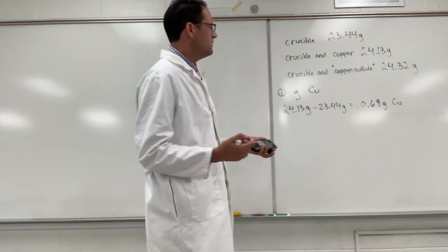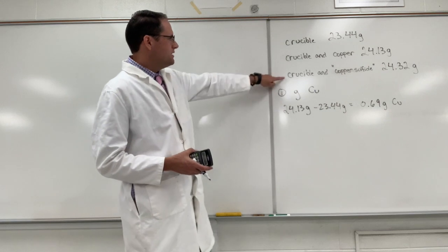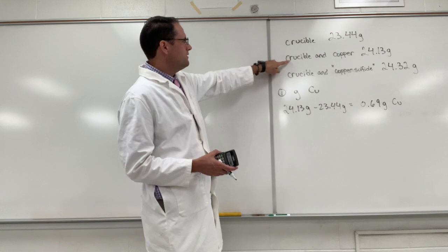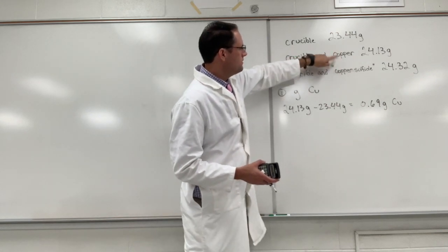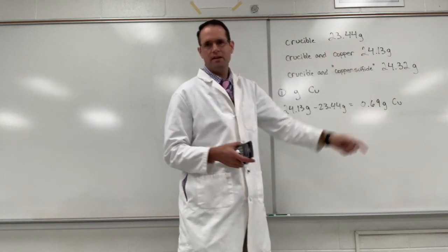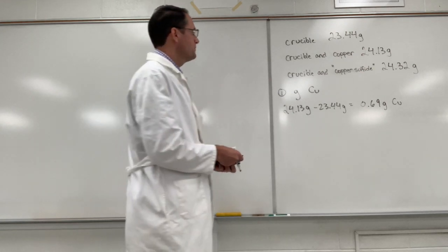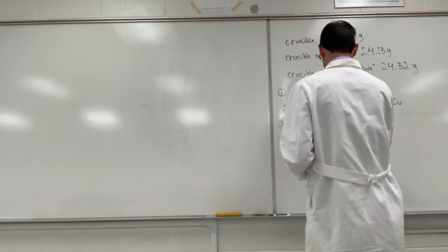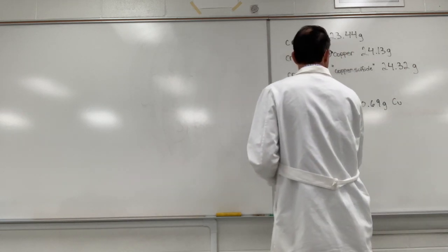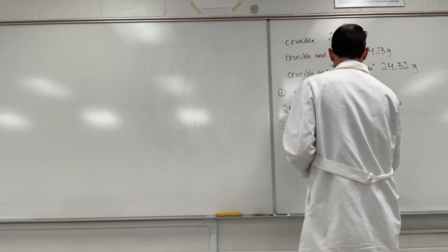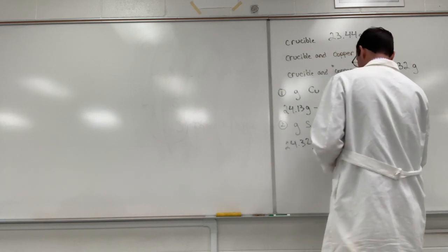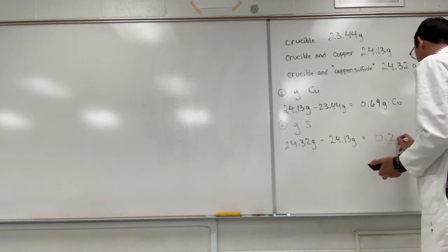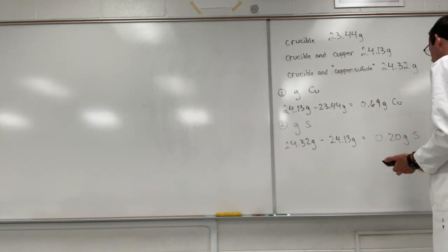Step two, we want to calculate the grams of the sulfur. And we can do that by taking the mass of the crucible and our product and subtracting the mass of the crucible and the copper. Because the only difference between these two is the amount of sulfur that has chemically bonded to the copper. And I'll just do that in my head, but this is 0.20 grams of sulfur.